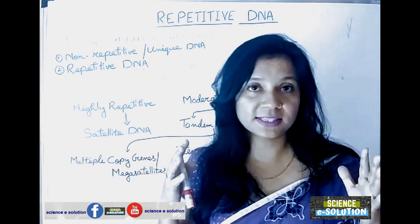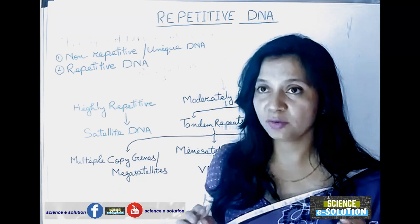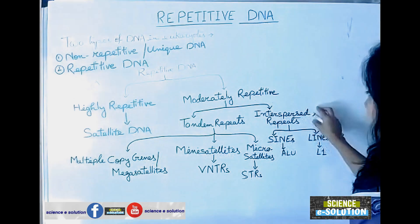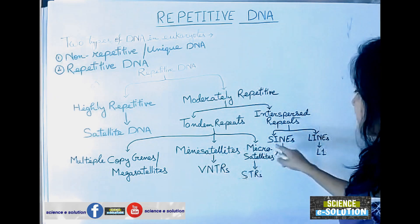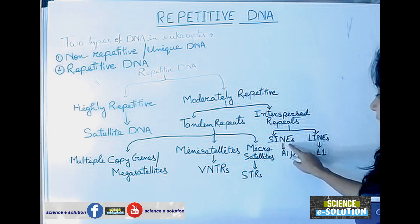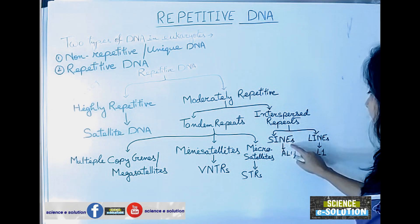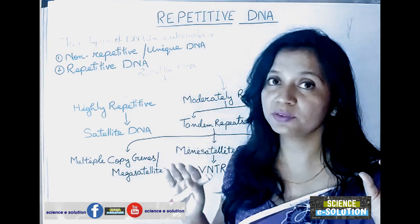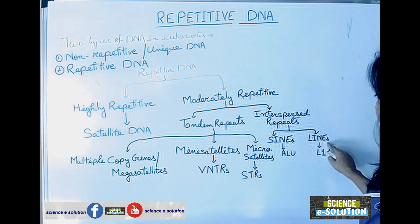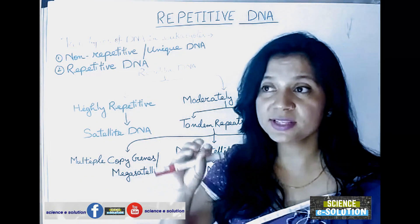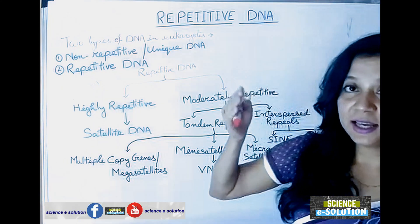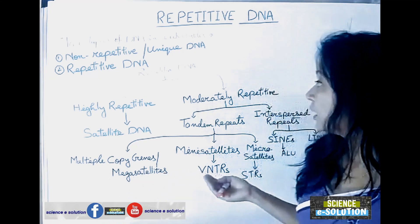DNA fingerprinting is done on the basis of VNTRs and STRs. A thorough explanation of satellite DNA — mega satellites, mini satellites, micro satellites — and DNA fingerprinting will be covered in another video tutorial. The last category is interspersed repeats, which are of two types: SINEs (short interspersed nuclear elements), whose example is Alu sequences, and LINEs (long interspersed nuclear elements), whose example is L1.